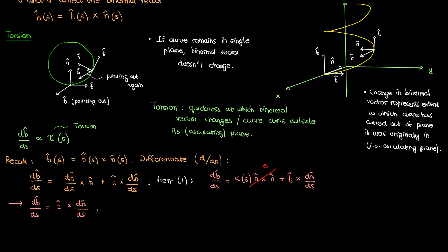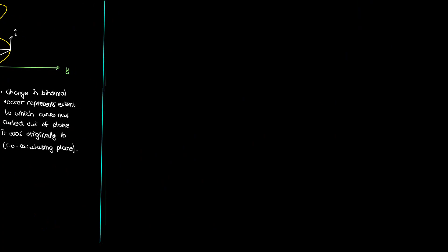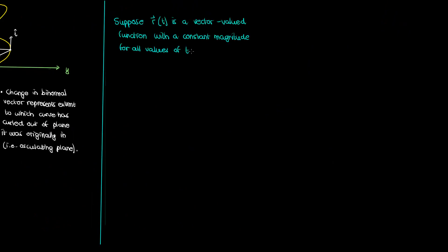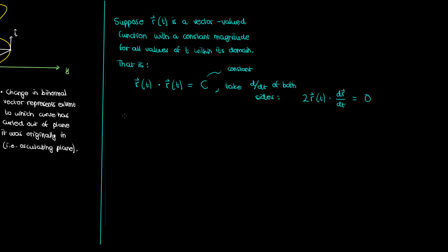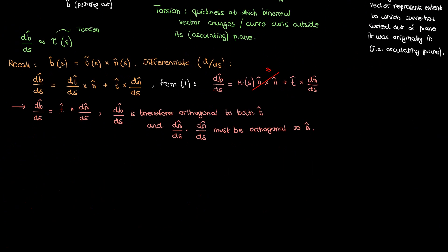Since db/ds = t × (dn/ds), the vector db/ds is orthogonal to both t and dn/ds. Now dn/ds must itself be orthogonal to the normal vector n, because the derivative of a vector of constant magnitude is always orthogonal to the original vector. To show why: if the magnitude of a vector r(t) — that is, r · r — equals a constant c, then differentiating both sides gives r · (dr/dt) = 0, meaning r and its derivative are orthogonal. Since the unit normal has constant magnitude 1, its derivative dn/ds is orthogonal to n.